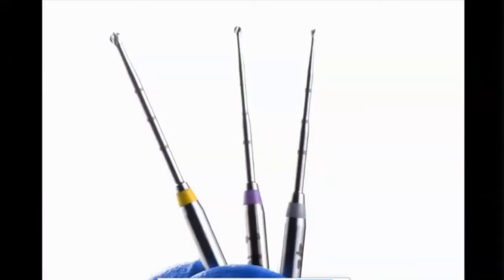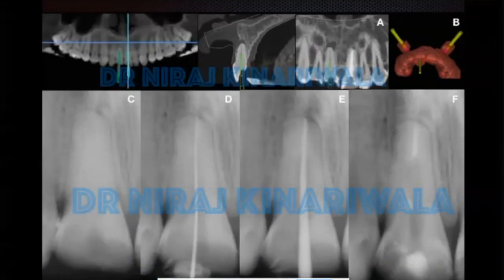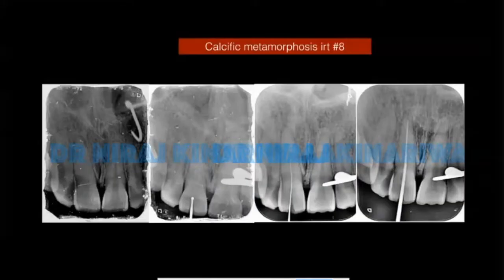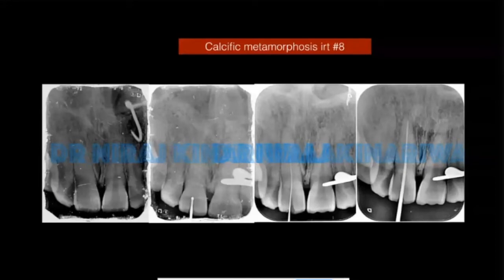First, we use long neck drills. For a case of calcific metamorphosis where we cannot see the canal entry on radiograph, first go for CBCT — open-mouth CBCT, noting the distance between maxillary and mandibular molars. Second, decide the target point and virtual drill path. After deciding that, start drilling through it, and we could easily scout the canal — it was scouted at the junction of the middle and apical third. Also, take multiple radiographs chairside; with 3D guided endodontics there is always a chance of error if the guide is not stable.